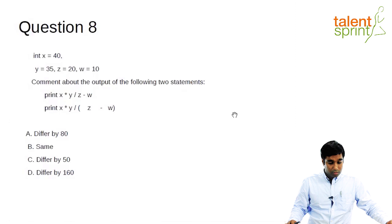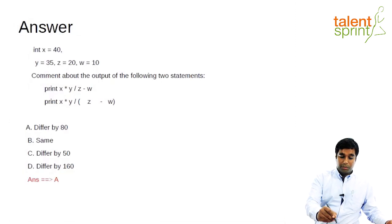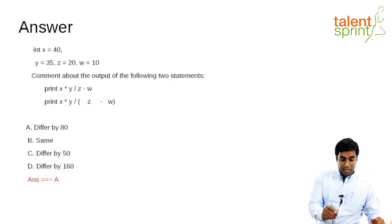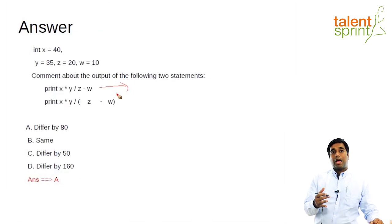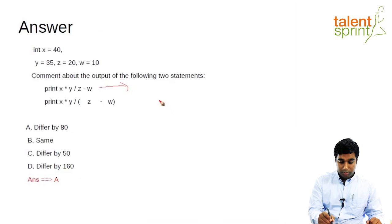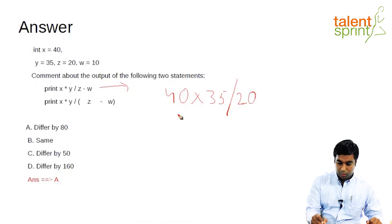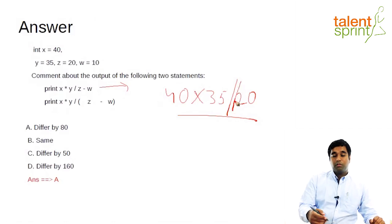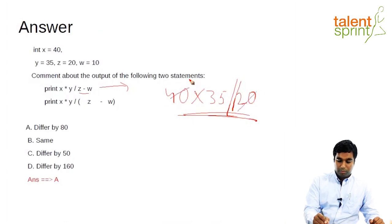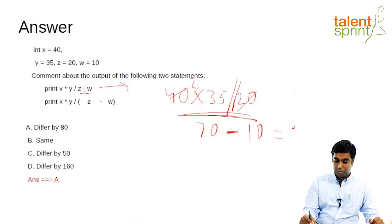So the answer for this question is A. Let me show you how. Let's evaluate the first expression. The evaluation happens from left to right. X is 40 multiplied by Y is 35, then divided by Z which is 20. Multiplication and division have the same precedence, so multiplication is calculated first — this expression equals 70. Then this is subtracted: the answer for the first expression will be 60.